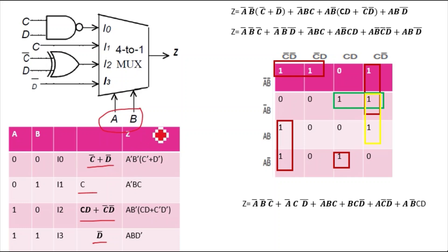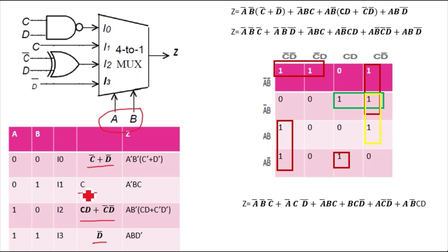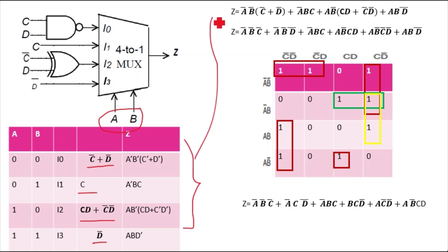To get the Z function: A-bar·B-bar multiplies with I0 = (C-bar plus D-bar); A-bar·B multiplies with I1 = C; A·B-bar multiplies with I2 = (C·D plus C-bar·D-bar); and A·B multiplies with I3 = D-bar. Adding all these together gives you the full Z function.